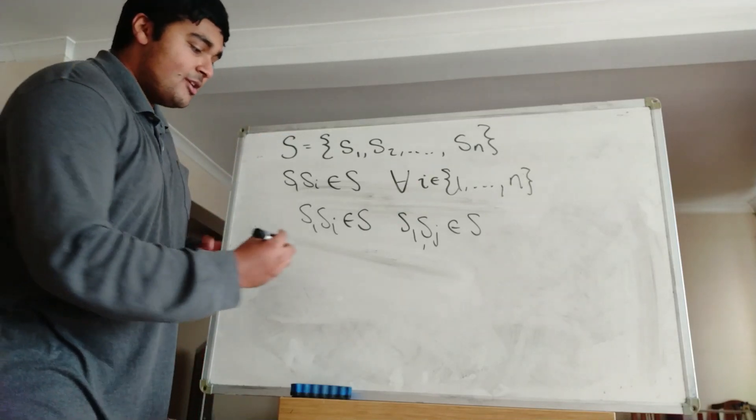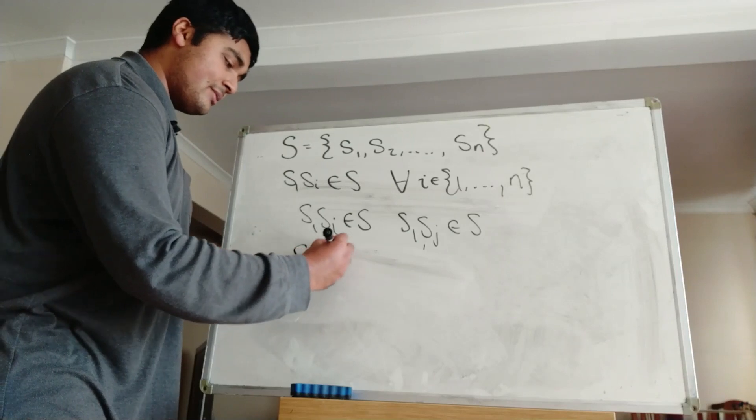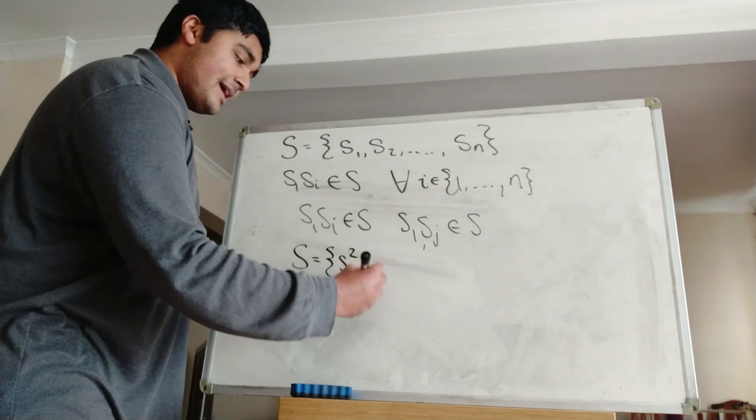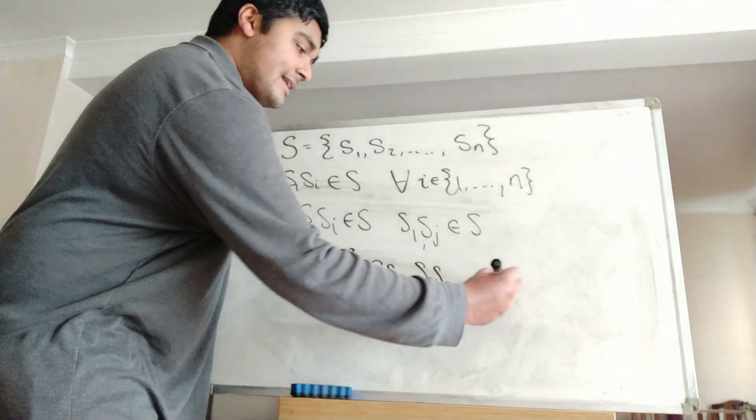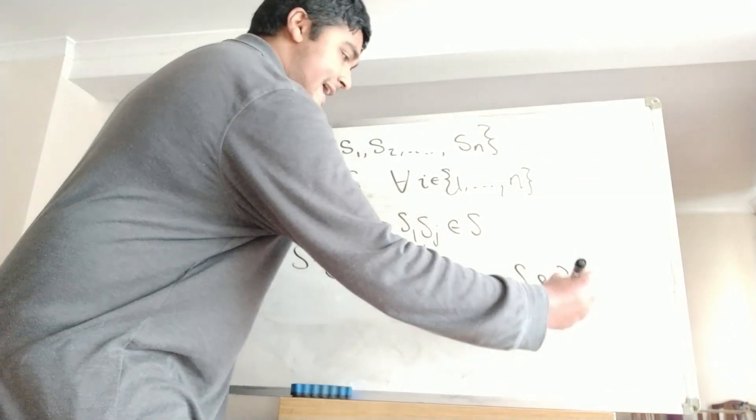Hence it must be S. So S also is equal to S1 squared, S1 times S2, S1 times S3, and so on, all the way up to S1 times SN, like so.